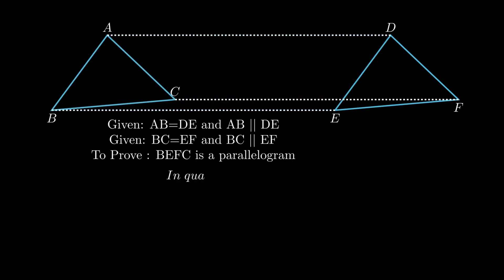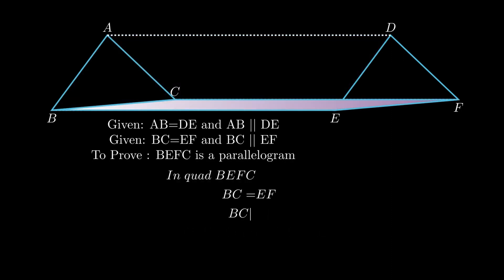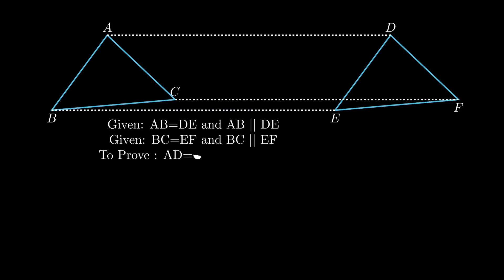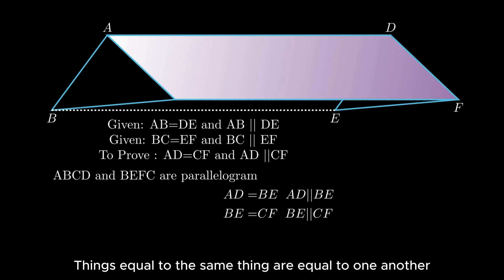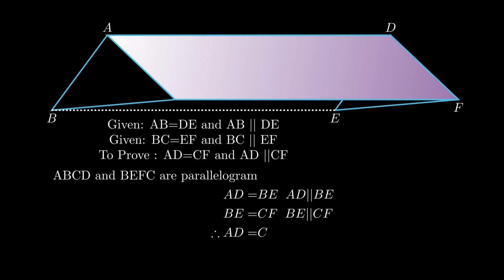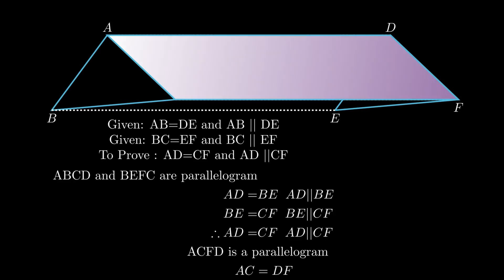For the second part, in quadrilateral BEFC, since BC is equal and parallel to EF, BEFC is a parallelogram. From parts 1 and 2, ABED and BEFC are parallelograms, so AD is equal and parallel to BE, and BE is equal and parallel to CF. By the axiom that things equal to the same thing are equal to one another, we conclude AD is equal and parallel to CF.